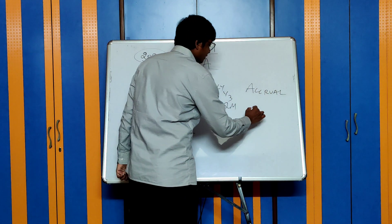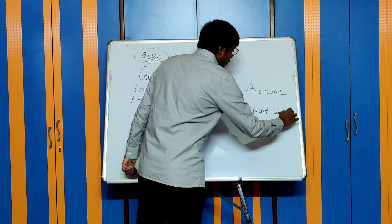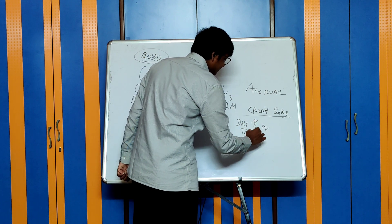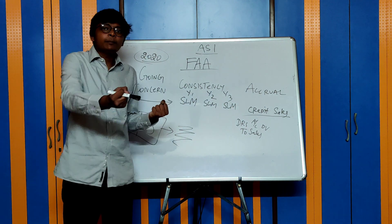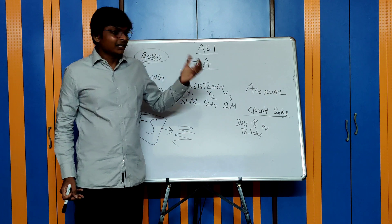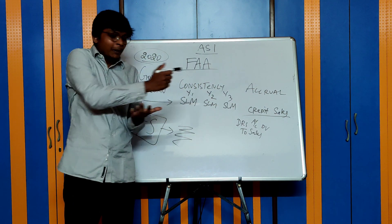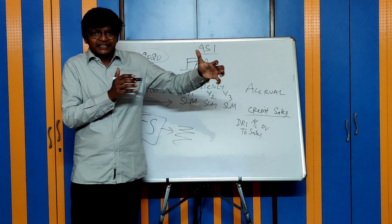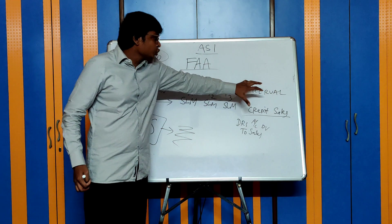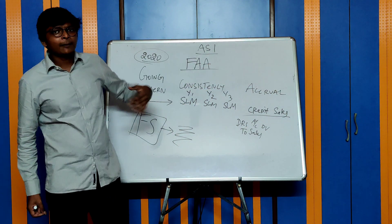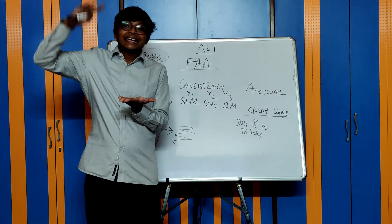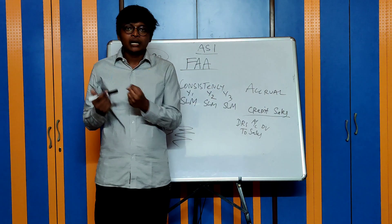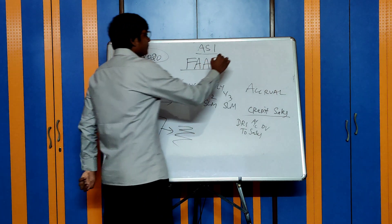What is accrual? A very basic concept. For credit sales, the entry is: Debtors account debit, to Sales. We are recording income even before receiving the money — that is the concept of accrual. Similarly, even if you don't pay interest to the bank, you still account for it in your financial statements. Income and expense which belong to a particular financial year should be accounted in the same year. After a company selects an accounting policy, it discloses this in the notes to accounts section of the financial statements.